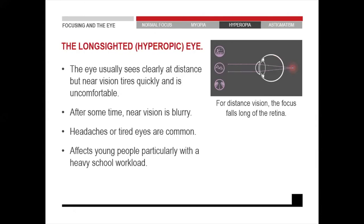Think of someone at the gym lifting a weight and holding it in the same position for 24 hours — at some point they'll drop that weight. It's the same with the eye: the moment the eye drops the weight of hyperopia is when near vision becomes blurry. This affects young people normally, particularly those spending a lot of time studying. When they only look far, they might not always be aware of their hyperopia, but when they start studying textbooks or doing computer work, they'll feel the strain and the hyperopia becomes apparent.